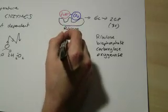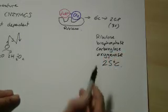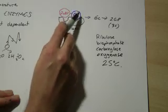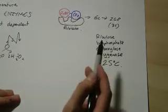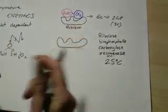The problem is this. Beyond a temperature of about 25 degrees Celsius, the Rubisco enzyme will start to favor, instead of carbon dioxide, it will start to favor the oxygenase reaction.